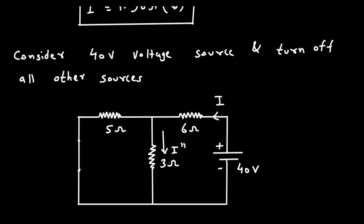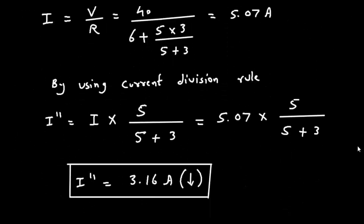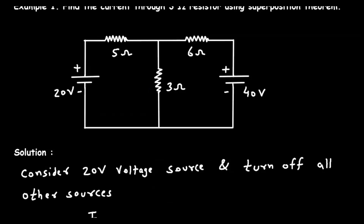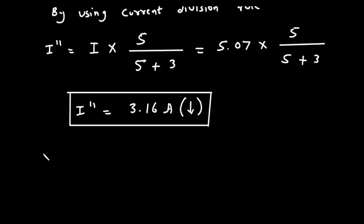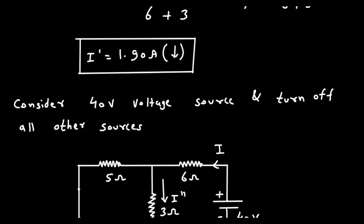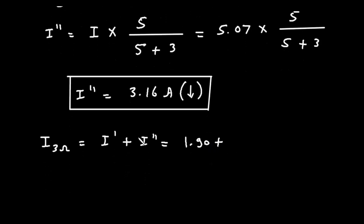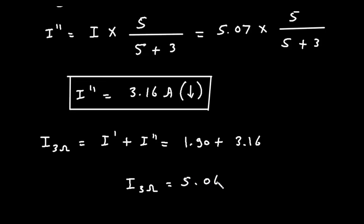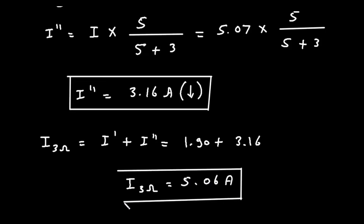As we can see, both I prime and I double prime are directed downward, so we add them to get the current through the 3 Ohm resistor. I(3 Ohm) equals I prime plus I double prime: 1.90 plus 3.16 equals 5.06 ampere. This is the final answer for this problem.